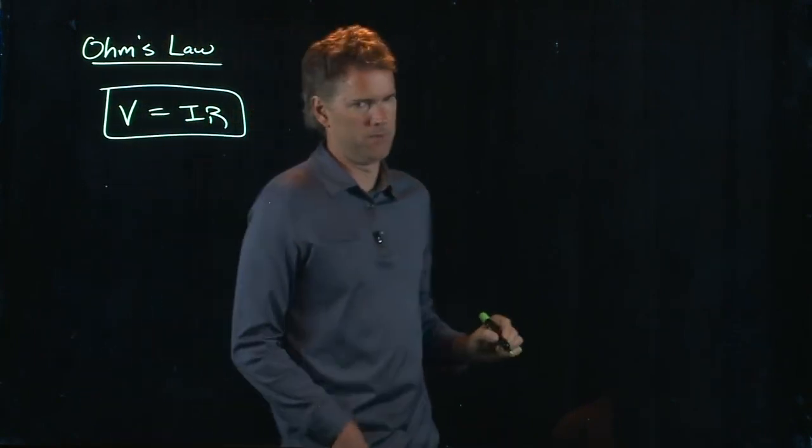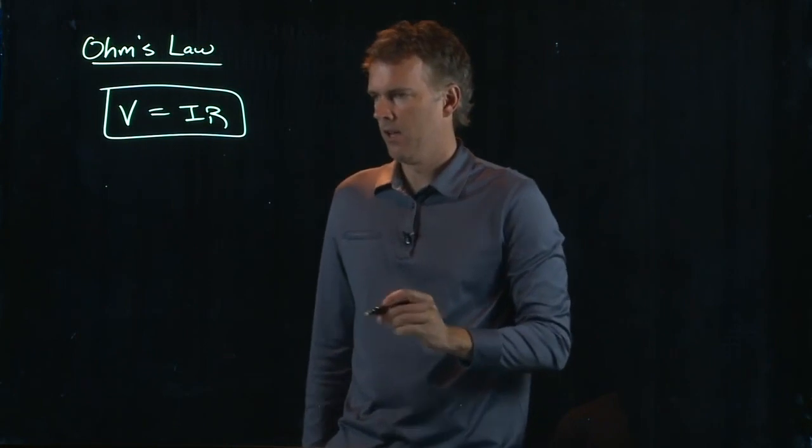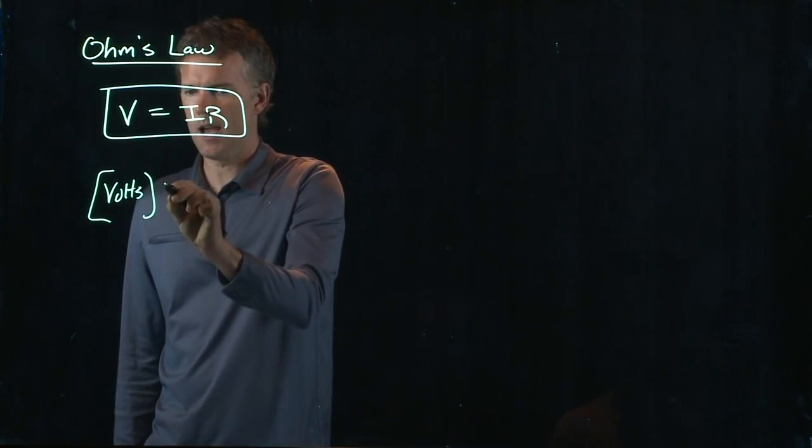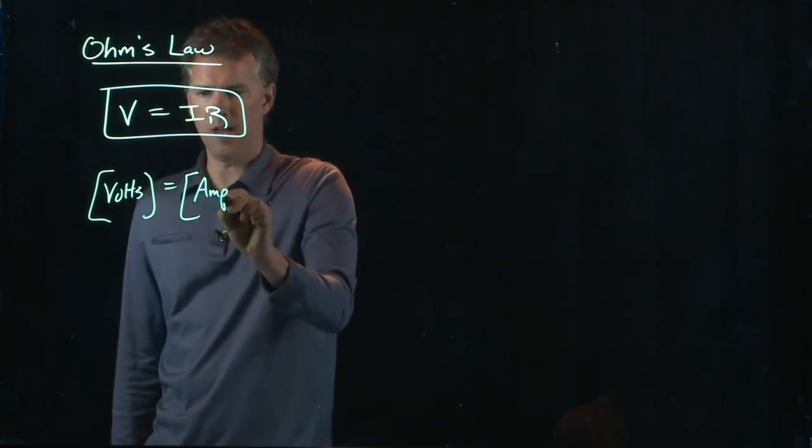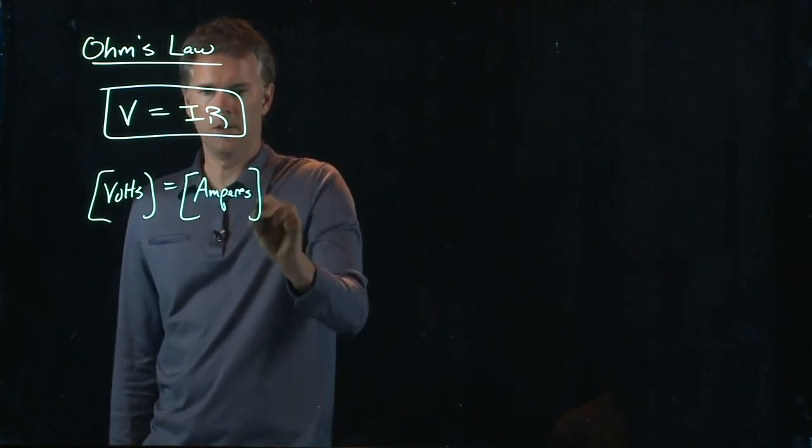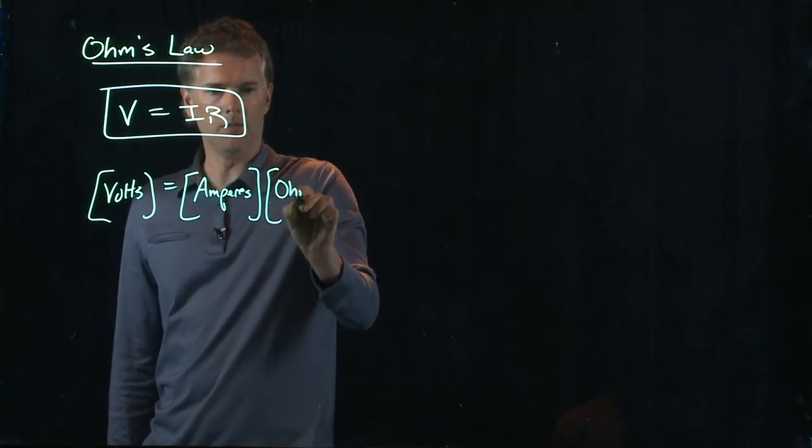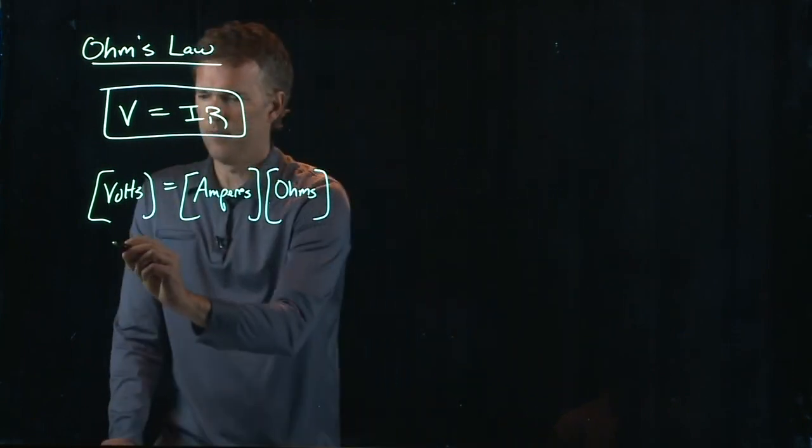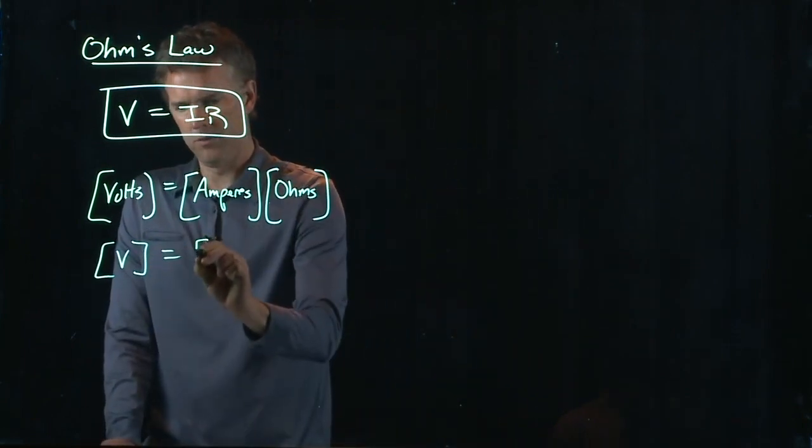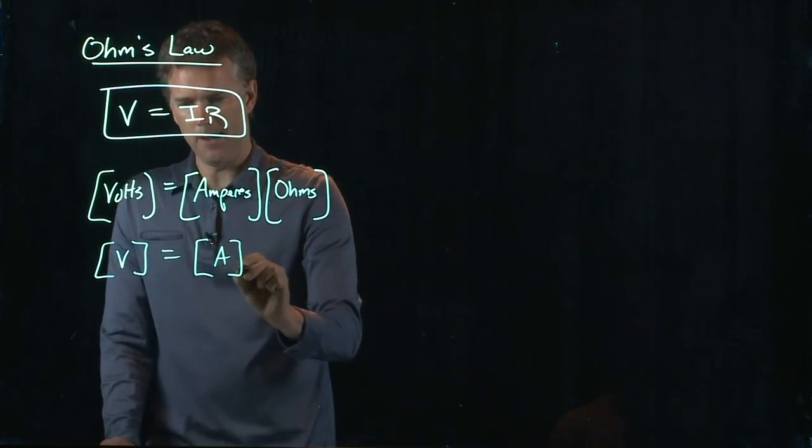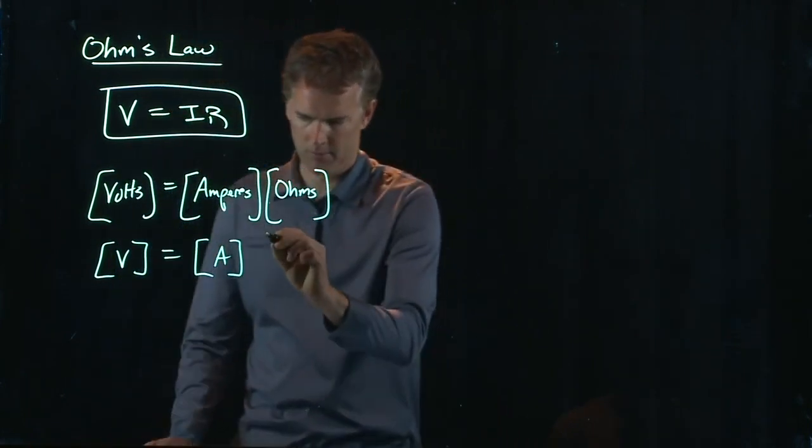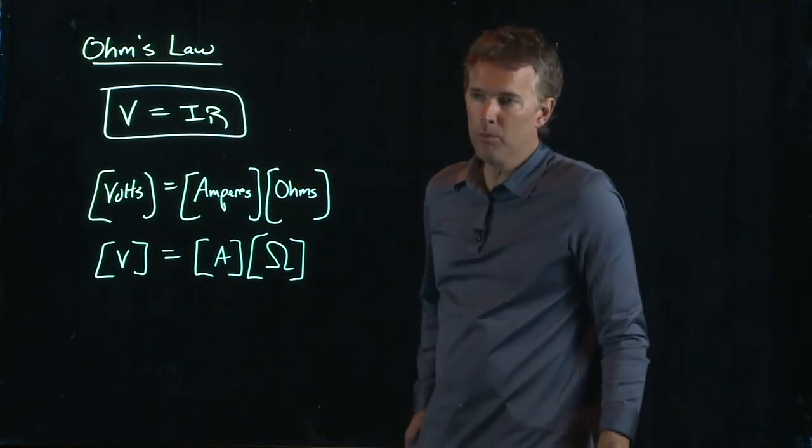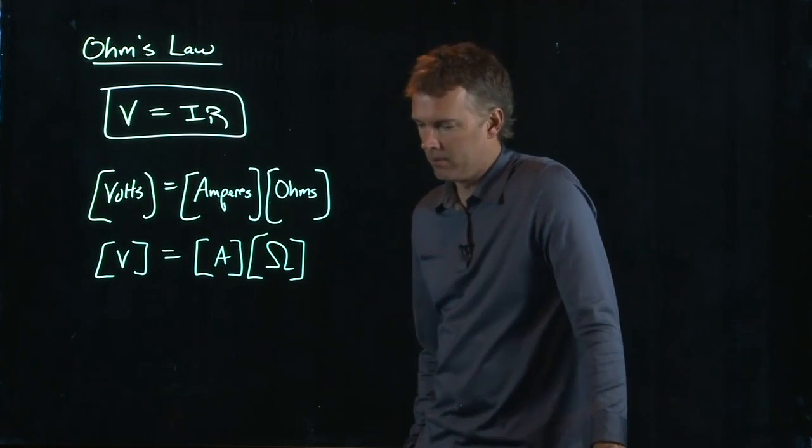V equals I R. V is volts, I is current, which is amperes, R is Ohms. And the way we write this stuff is capital V for volts, capital A for amps, and the Greek letter for ohms right there, which is capital omega.